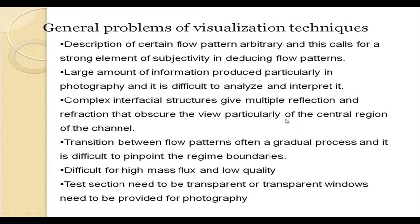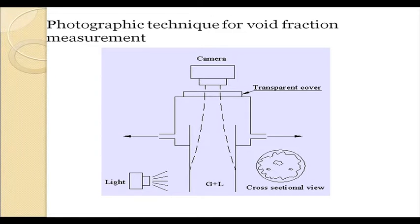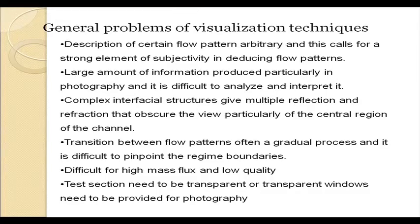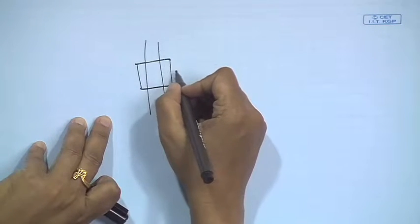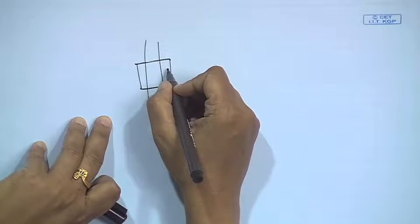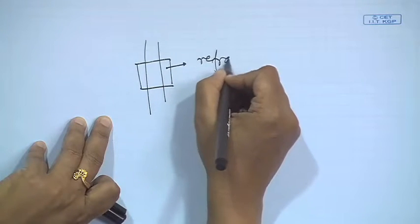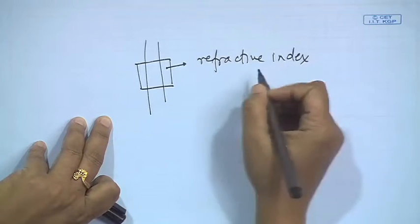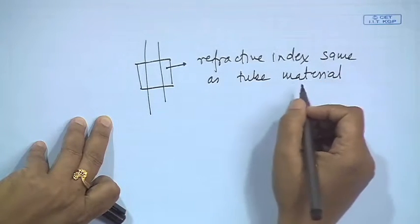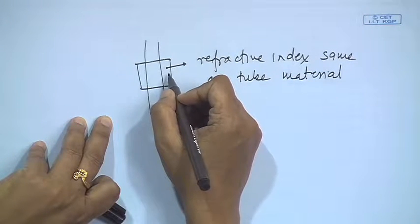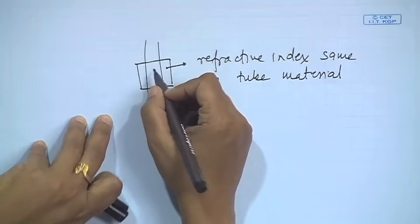In cases where the test section is not transparent, we need to install transparent windows at intervals to enable visualization of the flow phenomenon occurring inside the pipe. One serious objection - multiple reflection and refraction - is particularly true for circular mini or micro channels. To address this, we can use a view box: a rectangular or square box installed in the section you want to view, filled with some material which has the same refractive index as the tube material. This minimizes the refraction and reflection occurring at the tube surface and gives us a better representation of the flow inside.